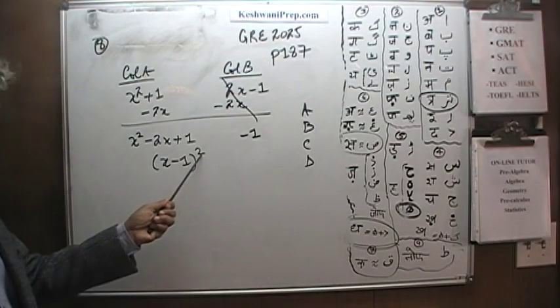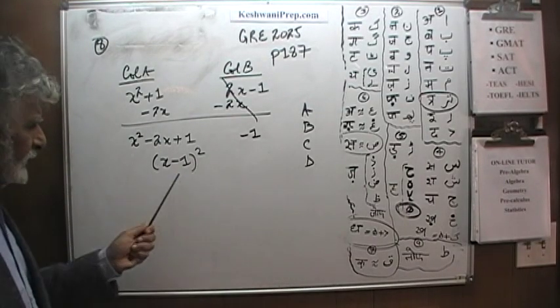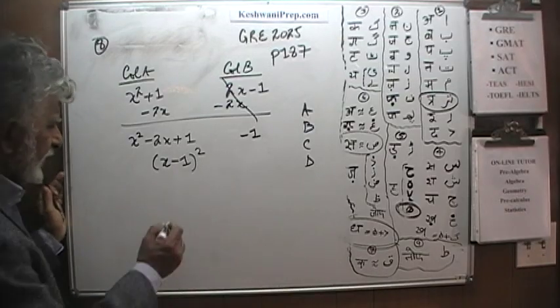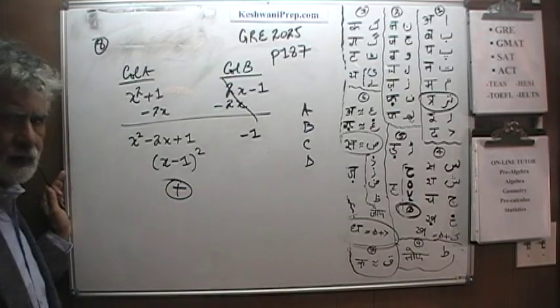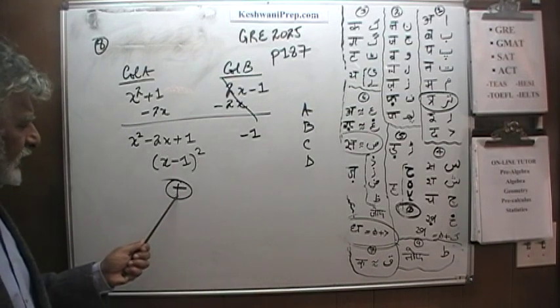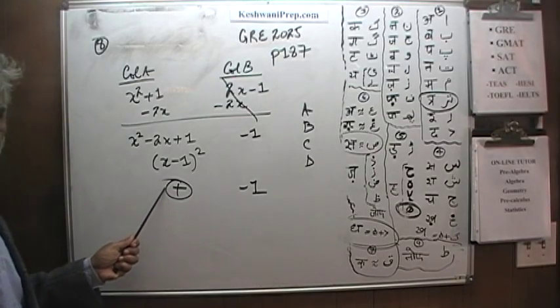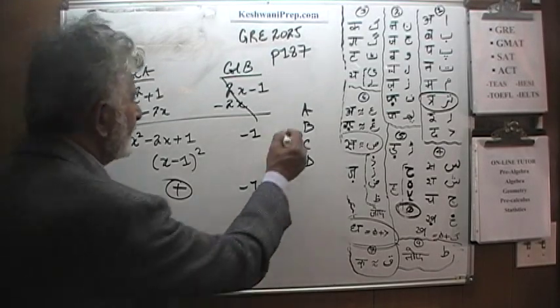Well if it is a perfect square, then this quantity, no matter how many times you try to plug in numbers, you will always find that this quantity is always positive because it is squared. We are comparing some quantity that is positive versus a negative 1. Of course this quantity is always going to be greater than this one. The answer is A.